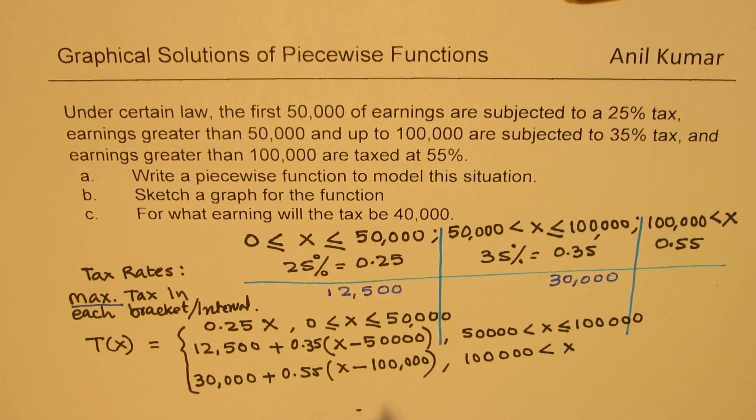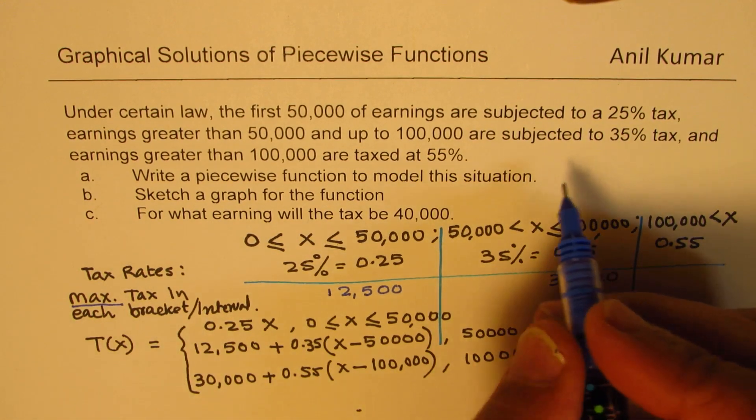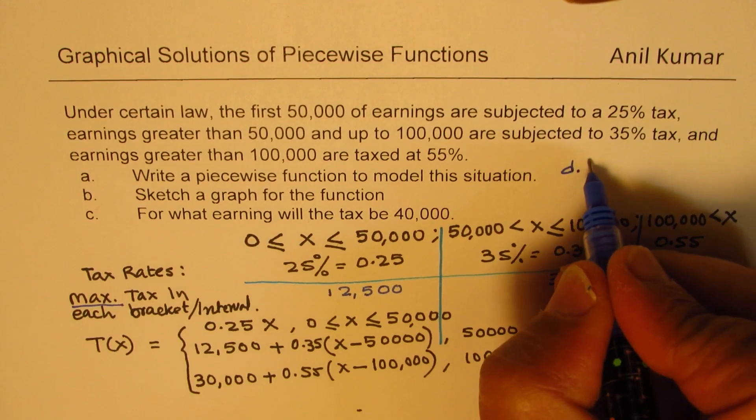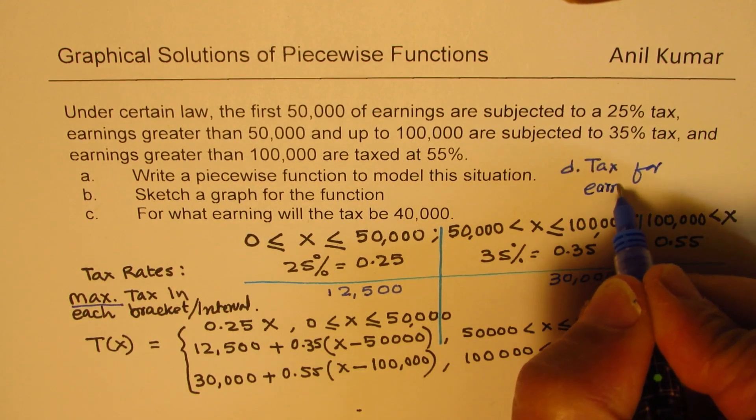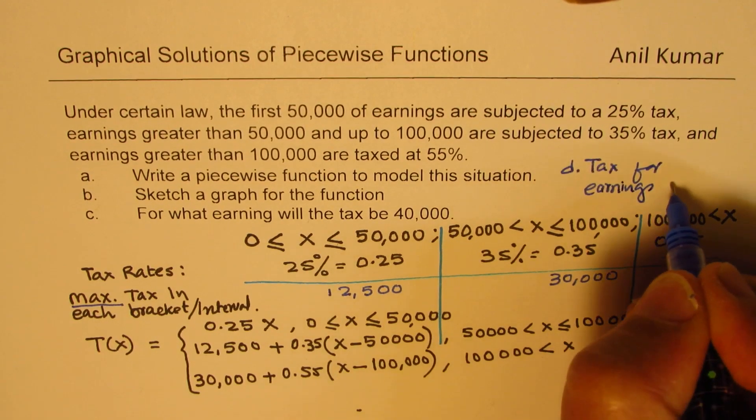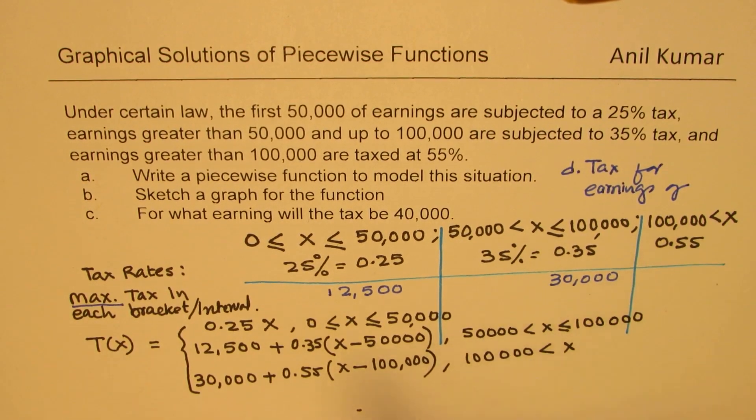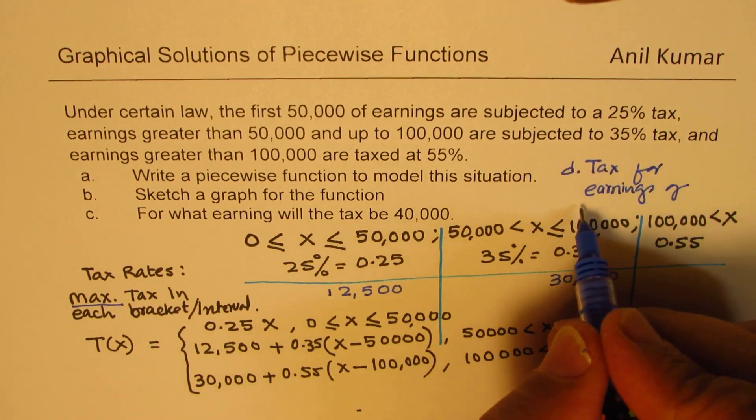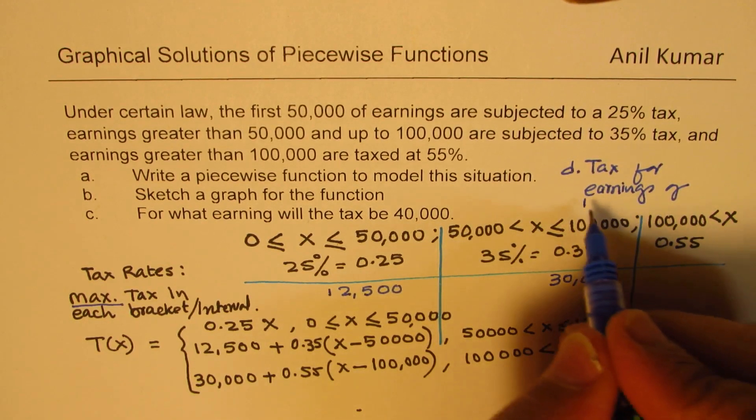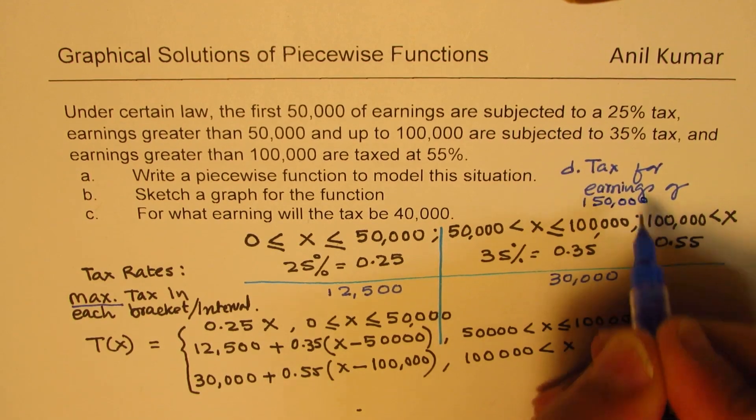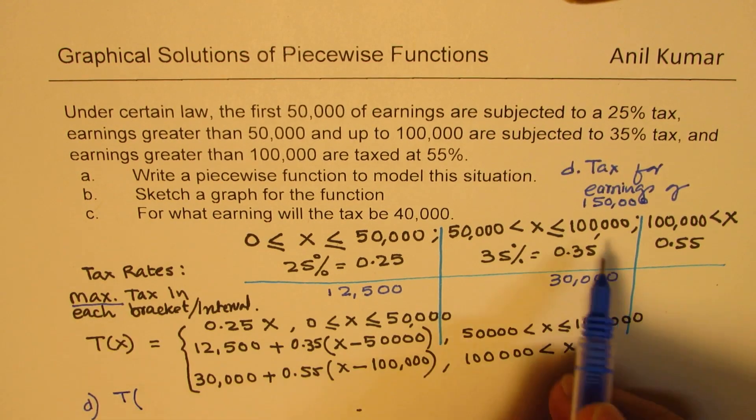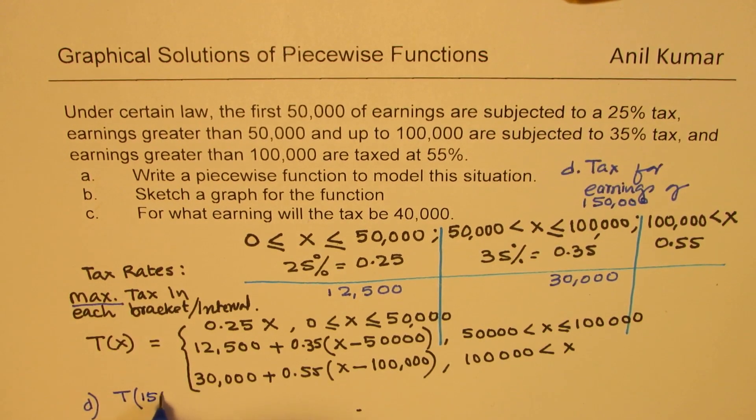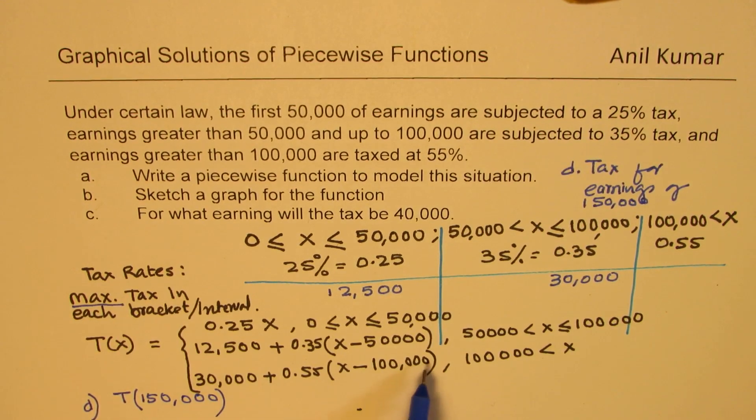Let me take an additional example here. Let's call that as part D, and that is tax for earnings of 150,000. So let's do part D. I've just added this. So if I want to calculate what is my earning for 150,000, then using this formula, I know this is within this bracket.